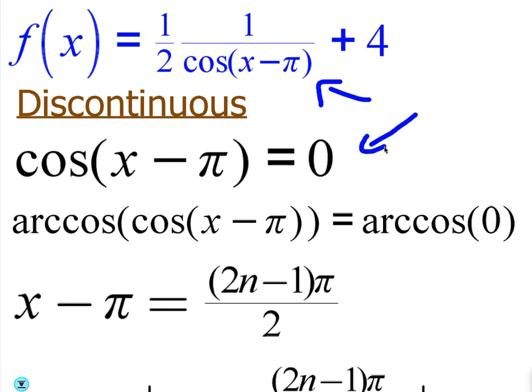And that will tell me where it's discontinuous. In other words, that will tell me where there's an asymptote. Now notice these other things, this one half and this plus four, they don't mean anything. They're not going to influence the continuity of the function. Only the bottom of that denominator is going to affect it. So I'm only setting the bottom of the denominator equal to zero to figure out where it's discontinuous.